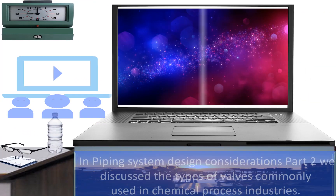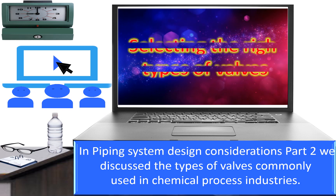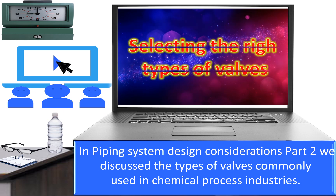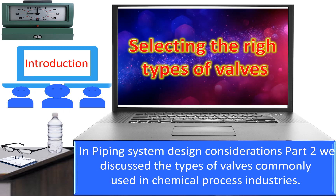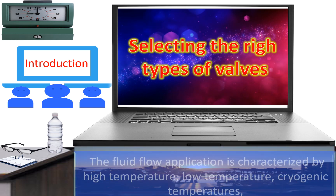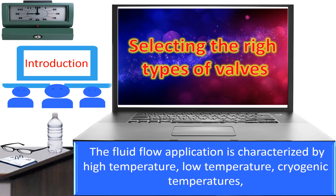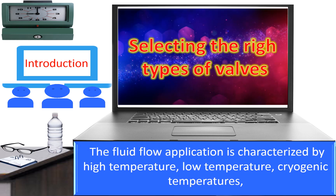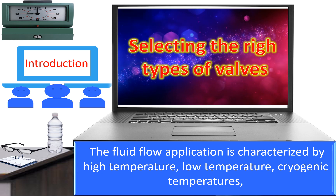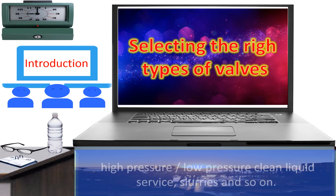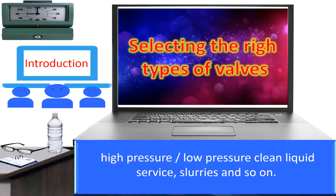In piping system design considerations part 2, we discussed the types of valves commonly used in chemical process industries. The fluid flow application is characterized by high temperature, low temperature, cryogenic temperatures, high pressure, low pressure, clean liquid service, slurries, and so on.